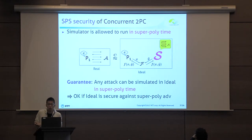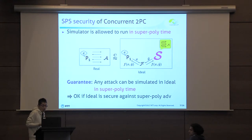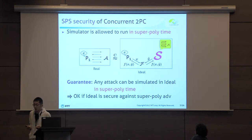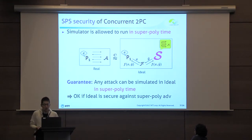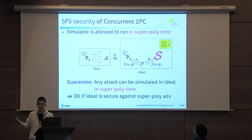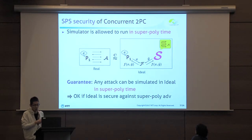SPS security is weaker than the standard polynomial time simulation security, but it still guarantees meaningful security in many cases. This is because SPS security guarantees that any attacks in the real world can be simulated in the ideal world in super-polynomial time. So if the ideal world is secure against super-polynomial time adversaries, then SPS security guarantees meaningful security. Indeed, the ideal world is secure against super-polynomial time adversaries in many cases, such as when computing the commitment functionality or OT functionality.